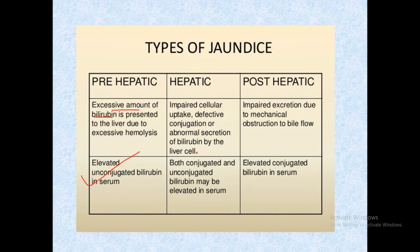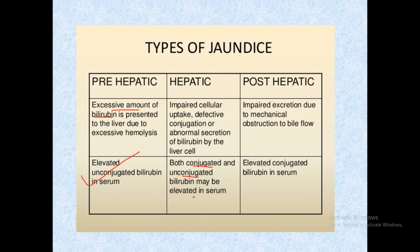In hepatic jaundice, there is impaired cellular uptake, defective conjugation, or abnormal secretion of bilirubin by liver cells. For example, if 55% of the liver is damaged, the remaining 45% of normal hepatocytes can still conjugate bilirubin, but the damaged 55% cannot. Therefore, both conjugated and unconjugated bilirubin may be elevated in serum.